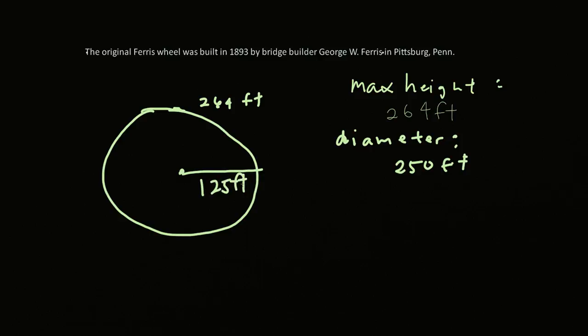And the problem wants us to find an equation for the wheel if the center is located on the y-axis. So we know that the center is on the y-axis and the maximum height is at 264. I can draw the x-axis, but you see that there's a gap. When you look at a Ferris wheel, the wheel itself is not on the ground; there is some type of support.